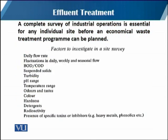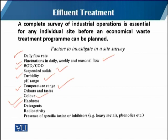A complete survey of the industrial operation is essential for an individual site before an economical waste treatment program can be planned. The factors to investigate in a site survey include: daily flow rate, fluctuations in daily, weekly, and seasonal flow, BOD and COD ratio changes, suspended solids, turbidity, pH range, temperature of the effluent, odor and taste, color, hardness, detergents, radioactivity, presence of specific toxins and inhibitors, and heavy metals and phenolic compounds.